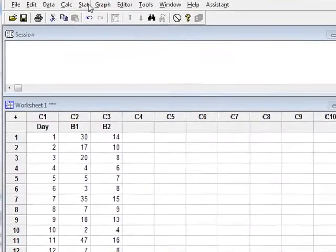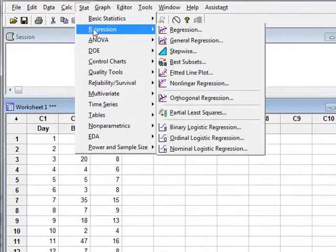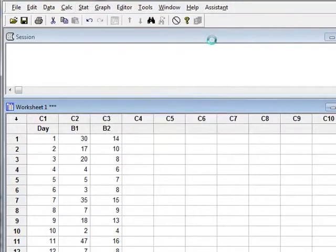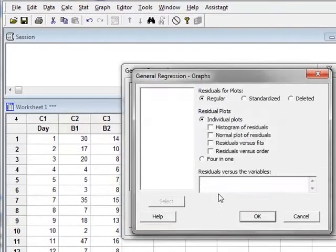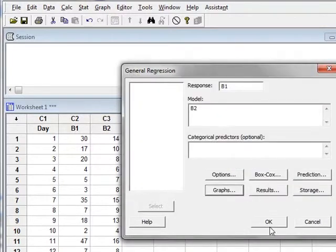We start by looking at a simple regression model and we will use general regression, making B1 behavior the response predicted by behavior B2. Under graphs we will ask to display standardized residuals plotted against the fitted values. We click OK and then run the analysis.